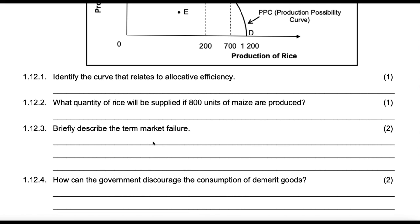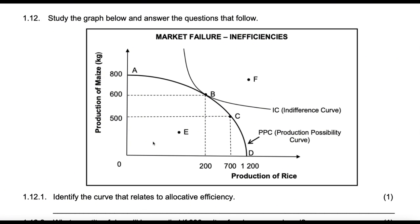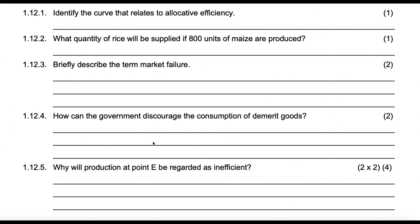How can government discourage the consumption of demerit goods? Well, government can do a lot of things. Number one, they can increase excise duties, otherwise known as sin tax, which is tax charged on demerit goods — charged on cigarettes, charged on alcohol. Government can also regulate the operating hours of liquor stores, bottle stores, or any liquor outlet. And you saw what government did during lockdown — they prohibited the sale of alcohol completely. So government can control that.